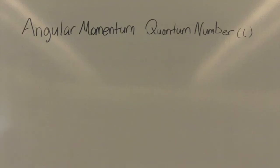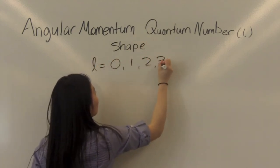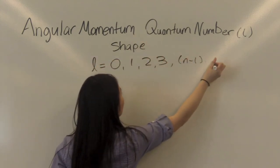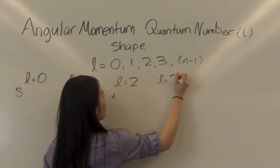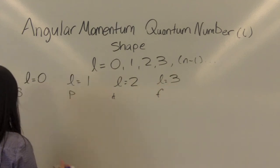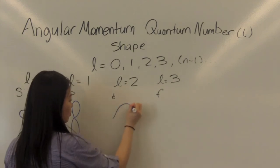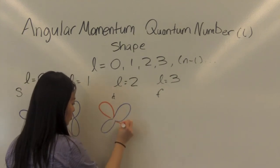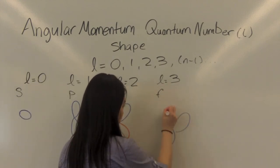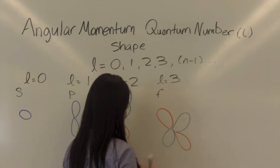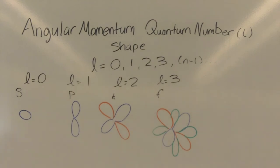The angular momentum quantum number describes the shape. It distinguishes the orbitals of a given N shell having different shapes. It can have any value to a maximum of N minus 1. Some shells are sometimes designated lowercase letters, such as L equals 0 is S, L equals 1 is P, L equals 2 is D, and L equals 3 is F. S is shaped like a sphere, P is shaped like a dumbbell, D is shaped like a clover leaf, and F is shaped like a multi-petaled flower.